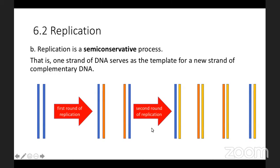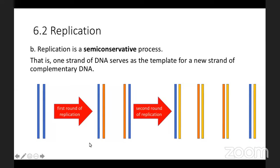To make sure you really get this, I drew out a second round of replication. If we take the two new daughter strands and replicate them again, we'd start by prying them apart — giving us four template strands. Our template strands are taken from the original daughter strands, and the newly synthesized strands are shown in yellow. So each second-generation DNA replicate is semi-conserved from the first generation of daughter strands.